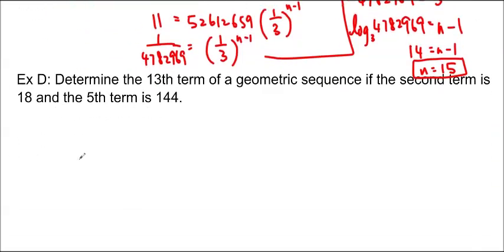The next one is really similar. We're going to determine the 13th term of a geometric sequence if the second term is 18 and the fifth term is 144. So this is a little bit harder because we don't have the first term, so we can't just plug it in. But it's still not that bad. We know that T sub 2 equals AR to the 1, and we also know that T sub 5 equals AR to the 4. So this equals 18 and this equals 144.